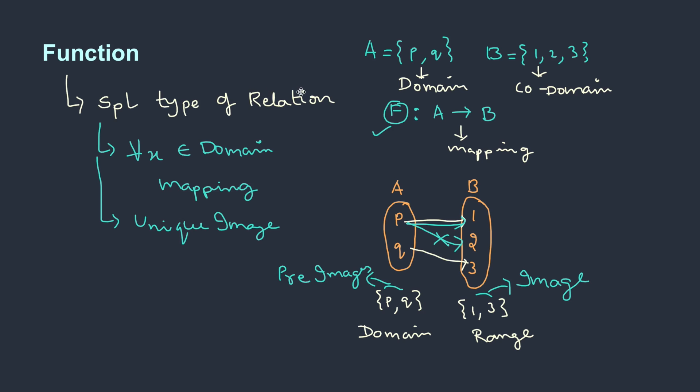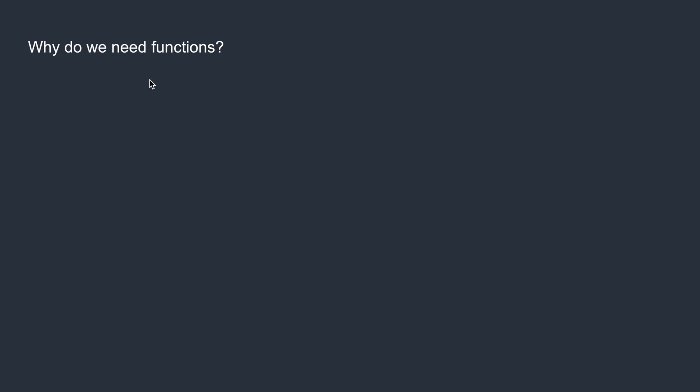We already studied about relations. Basically, it tries to connect elements of some set A to another set B. There is some mapping. Now, why do we need to specially define something called a function with certain conditions? Is it really required? And where do we use it?